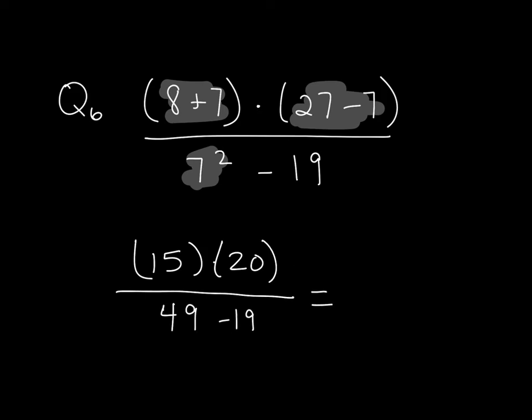So I multiply the top together. 15 times 20 equals 300. And in the denominator, 49 minus 19 equals 30.